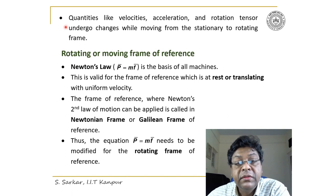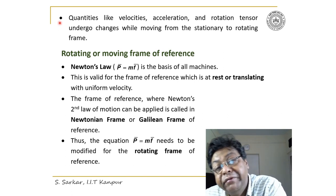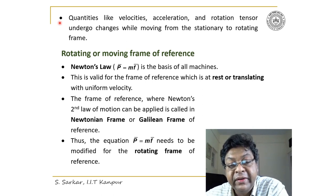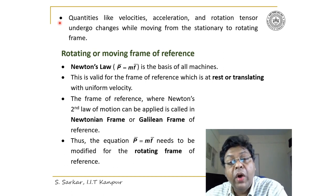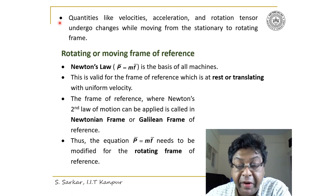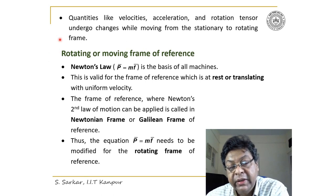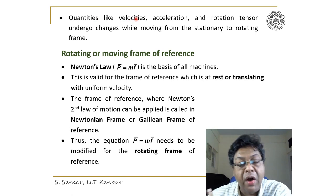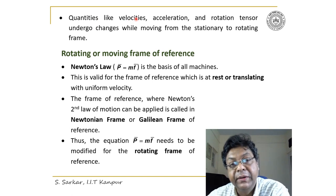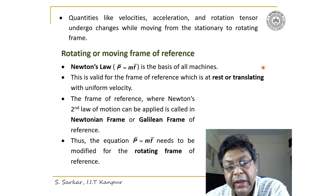Furthermore, quantities like velocities, acceleration, and rotation tensor undergo changes while moving from a stationary to a rotating frame. You can appreciate this because relative velocity and absolute velocity are vectorially related by the tangential component. Thus the quantities of absolute and relative velocity are different, and accordingly the acceleration, rotation, and rotation tensor in both frames are different.